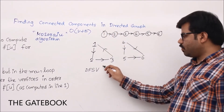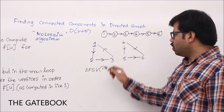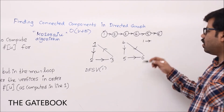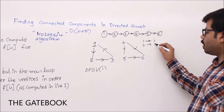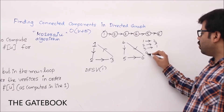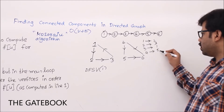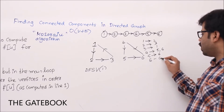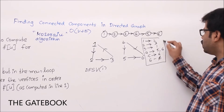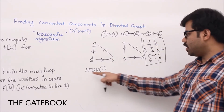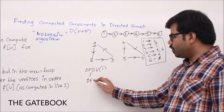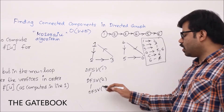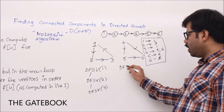Starting DFS from vertex 1: DFS visit of 2 is called, then DFS visit of 3. After that we go back. We then come back to the main loop — 1, 2, 3 are already visited — so we pick 4. When DFS visit on 4 is called, DFS visit of 5 is called, then DFS visit of 6. This is the execution sequence.